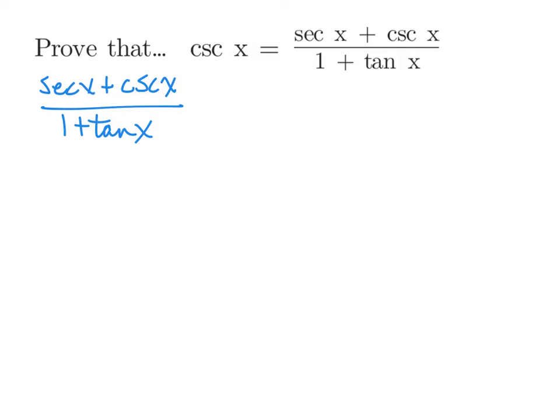I see that 1 plus tangent in the denominator — that kind of looks Pythagorean, but nothing is squared and I don't really see anything else. So when you're stuck, a good place to go is to turn everything into sines and cosines. Secant is the reciprocal of cosine and cosecant is the reciprocal of sine, and in the denominator we'll have 1 plus tangent, which is sine over cosine.